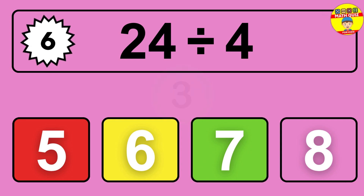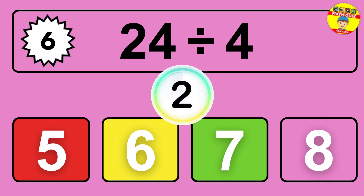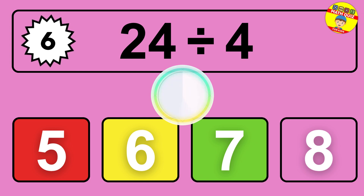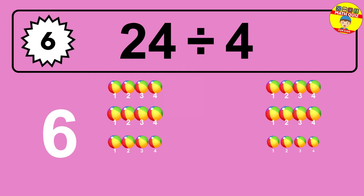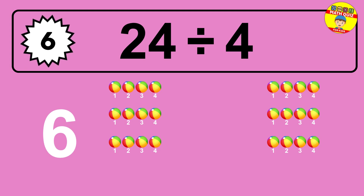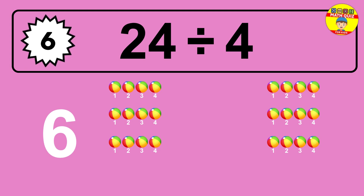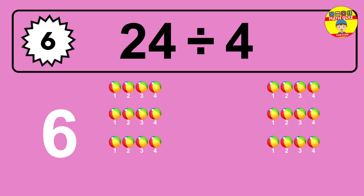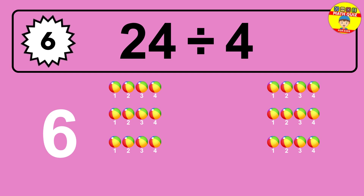Let's break it down. Picture yourself with six objects. Can you imagine them lined up? 24 divided by 4 is time to think. Let's go to the solution. Divide the number 24 by 4. Each group contains 4 units, so dividing 24 by 4 results in 6 equal groups. Thus the result is 24 divided by 4 equals 6.